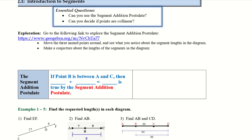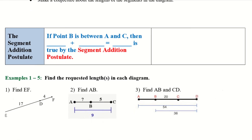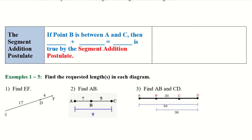Alright, so the segment addition postulate. If point B is between A and C, let's go ahead and draw that out. So I have 3 points, and point B is in between A and C. Then AB plus BC will give us AC. This is true by the segment addition postulate.